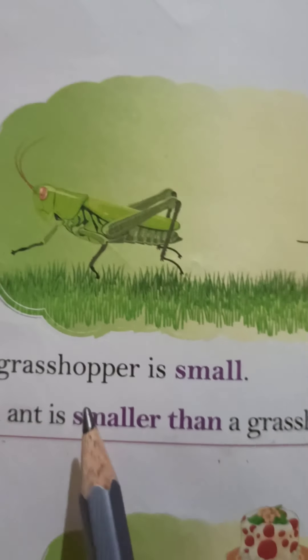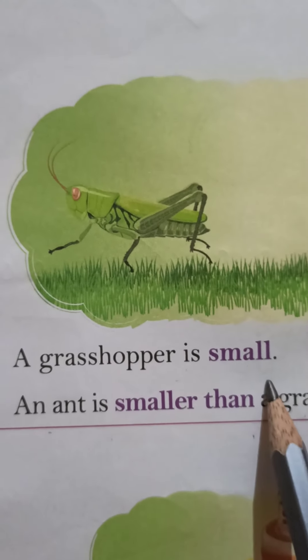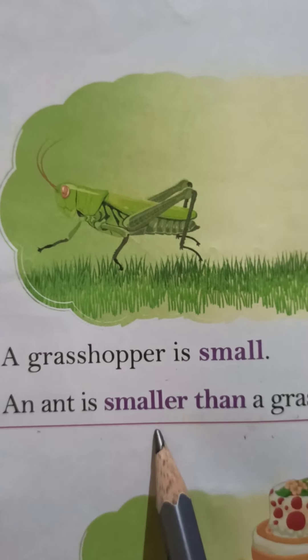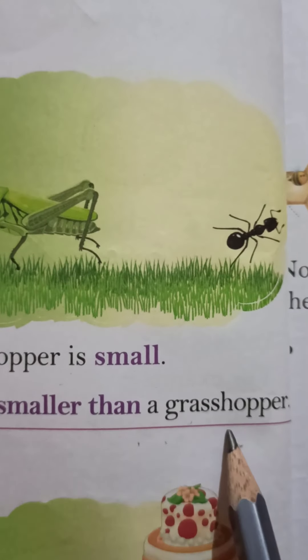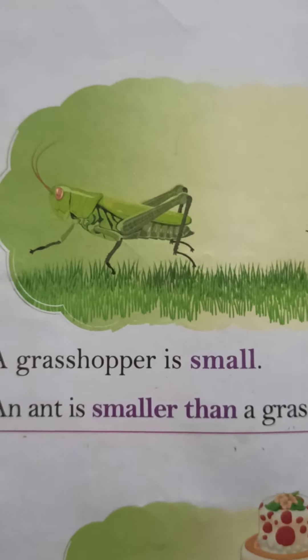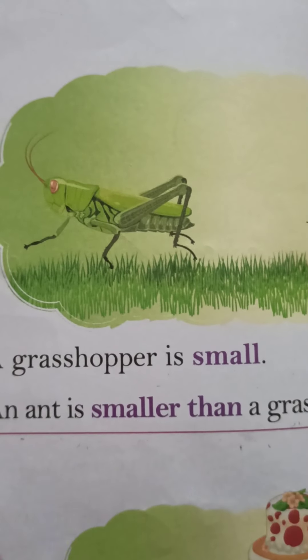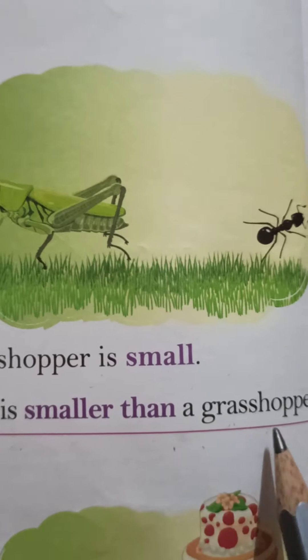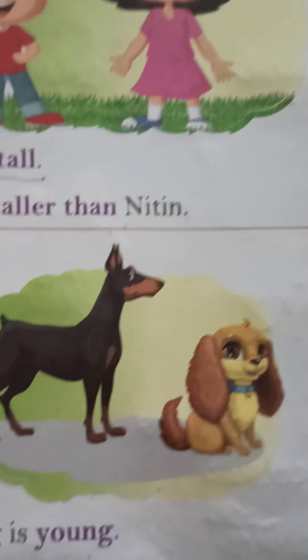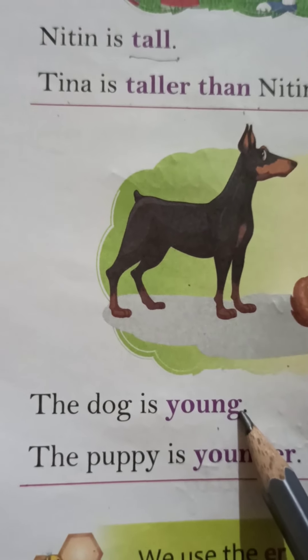Next example. A grasshopper is small — grasshopper छोटा होता है. An ant is smaller than a grasshopper — ant, grasshopper से भी छोटी होती है. हम दो चीजों को compare कर रहे हैं — grasshopper और ant को.